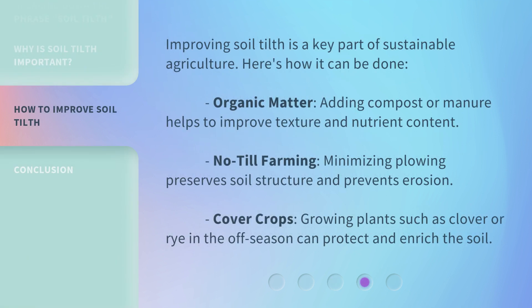Improving soil tilth is a key part of sustainable agriculture. Organic matter: adding compost or manure helps to improve texture and nutrient content. No-till farming: minimizing plowing preserves soil structure and prevents erosion. Cover crops: growing plants such as clover or rye in the off-season can protect and enrich the soil.